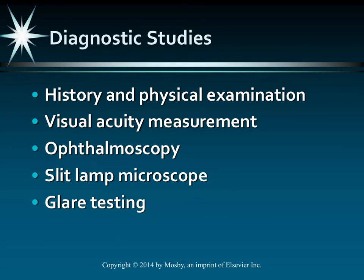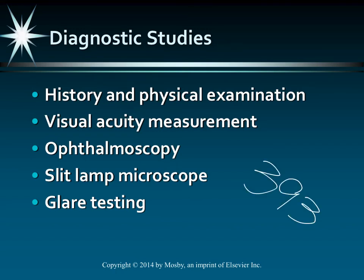For diagnostics, history and physical findings show these patients typically complain of decreased visual acuity. They often report not seeing colors clearly and experiencing glare, especially at night. The ophthalmoscope or slit lamp microscope will reveal the opaque lens, which is visible in advanced cases. See Table 22-2 on page 393 for other diagnostic studies useful in diagnosing cataracts.